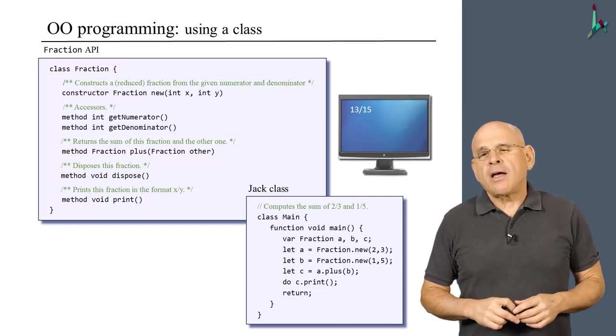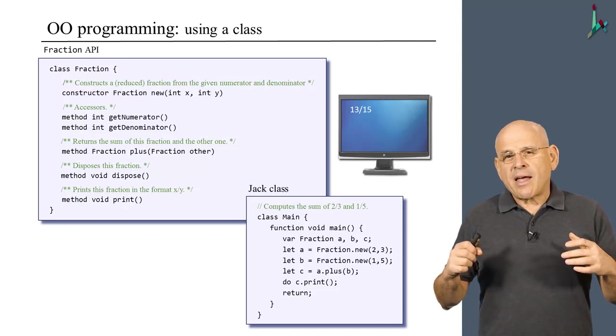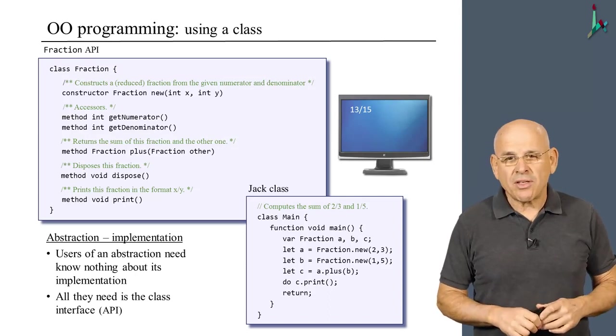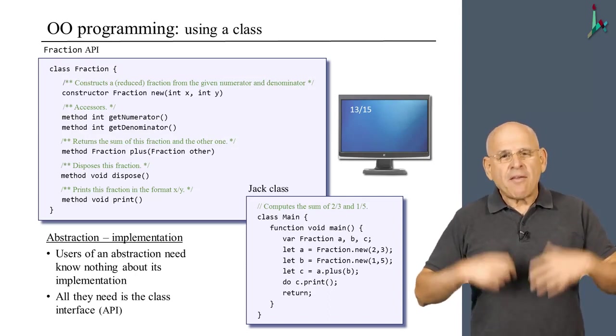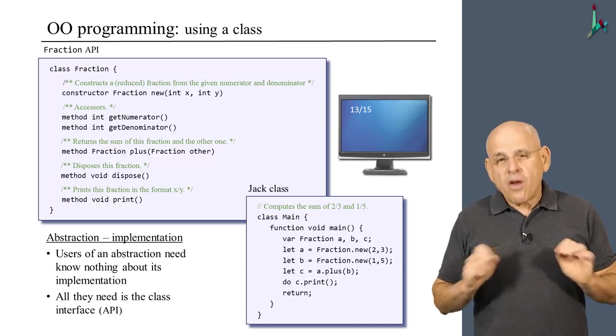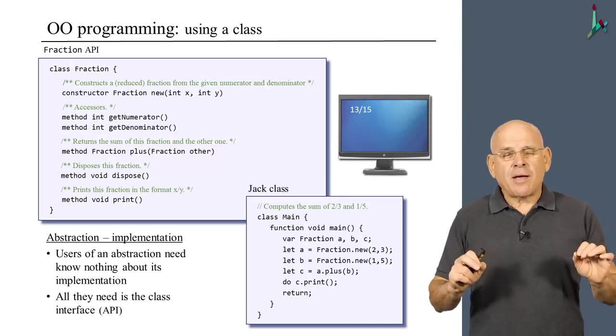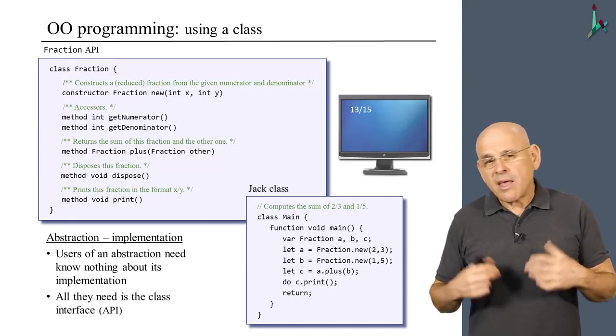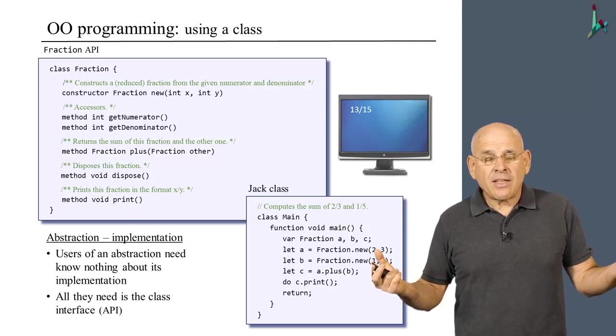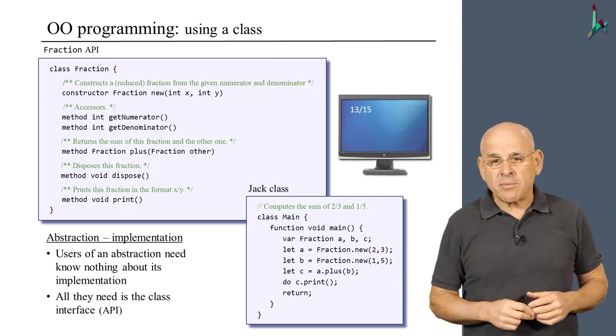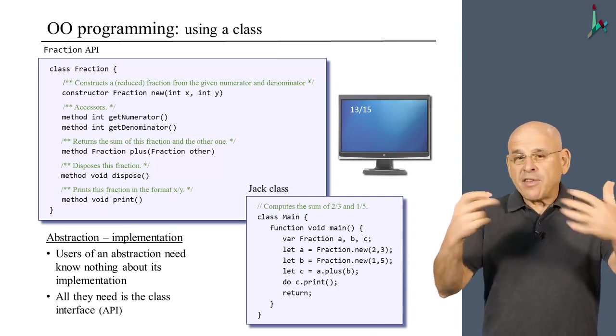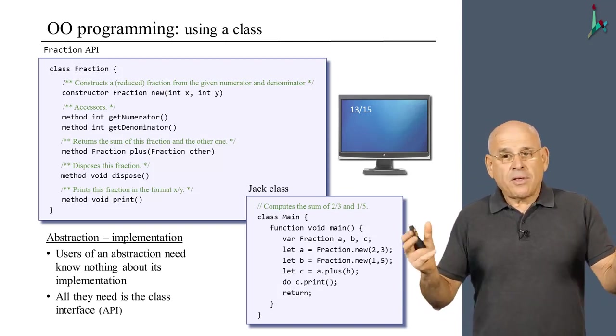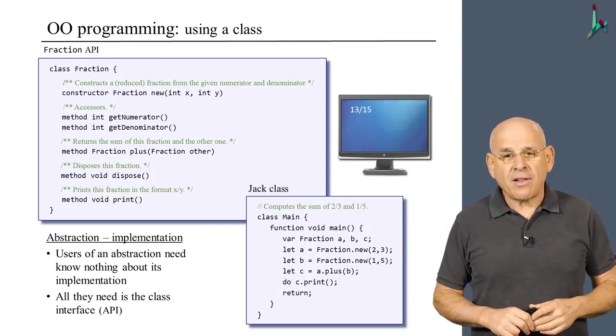But before we get into these detailed explanations, I'd like to make a general comment. And the comment is that here, once again, we meet the super important abstraction implementation principle, which we emphasize throughout this course. Notice that users of the fraction abstraction need to know absolutely nothing about how the fractions are actually implemented. They view the fraction as a black box abstraction. And they just use the services of this abstraction as advertised in the abstraction's API. And that's perfectly okay.